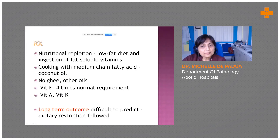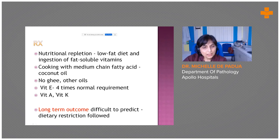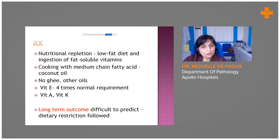The treatment of this condition is mainly aimed at nutritional repletion. The patient is advised a low-fat diet with fat-soluble vitamins. Cooking should be done with medium-chain fatty acids — coconut oil can be used, but no ghee or other oils. Fat-soluble vitamins A, E, and K are given at almost four times the normal requirement. The long-term outcome is difficult to predict and depends on dietary restriction followed; overall the prognosis is not very good.